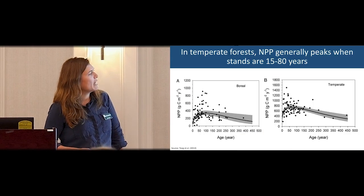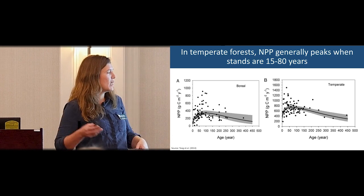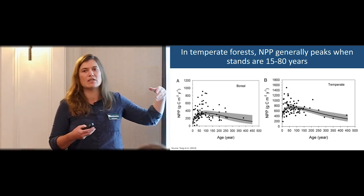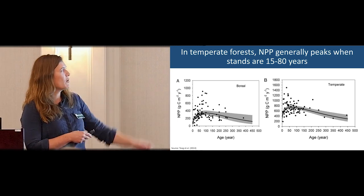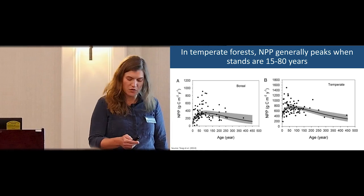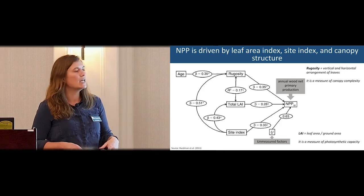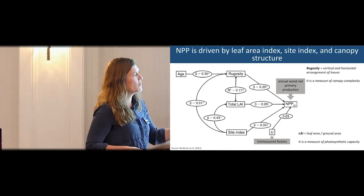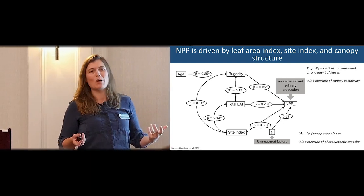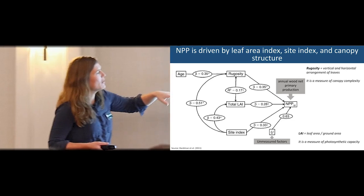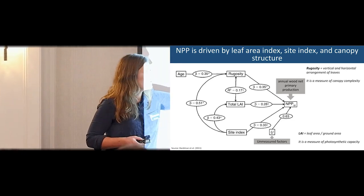When we look at net primary production, as Bill talked about with sequestration, there's a peak in sequestration when stands are fairly young — in the temperate forest, about 50 to 80 years old. This is showing net primary production just of the wood, because that's what we can measure. There are a number of factors that correlate — shown here as correlation coefficients with wood growth — including leaf area index, which is a measure of photosynthetic capacity.